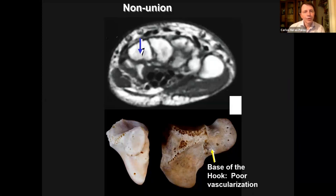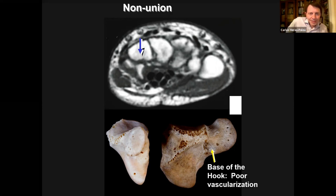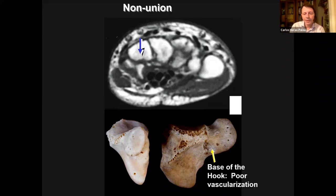These fractures often go into non-union. It is recommended to take extra radiological views when investigating, because on the PA and lateral of the wrist you won't see it. You can get a carpal tunnel view where you hyperextend the wrist and take a tangential x-ray, but that doesn't work very well for me — partly because it's quite painful for a patient, particularly with an acute fracture. So if I suspect one, I'll get a CT scan directly.